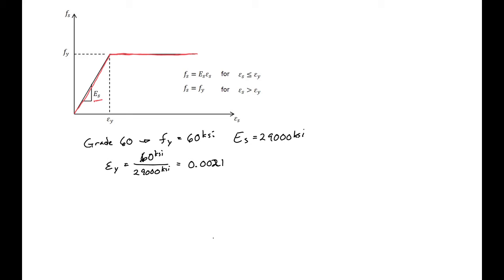So a strain less than 0.0021 we can use our linear relationship. And if we have a strain greater than 0.0021 then we'll just use our yield strength of 60 KSI.